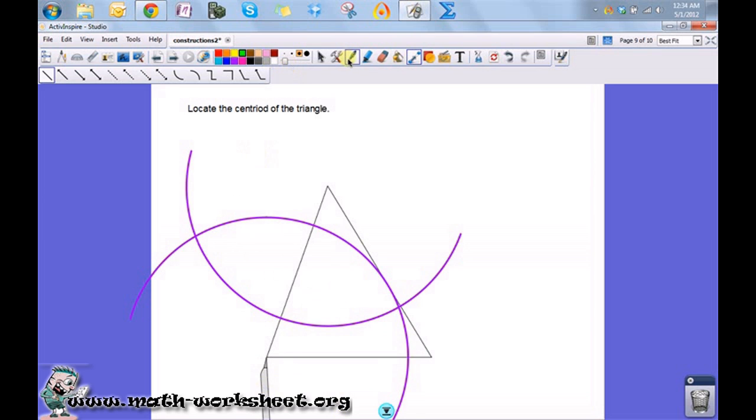Now if I draw a line through those two points where the two arcs intersect, let's straighten that out a bit, then this point right here is the midpoint of this side.